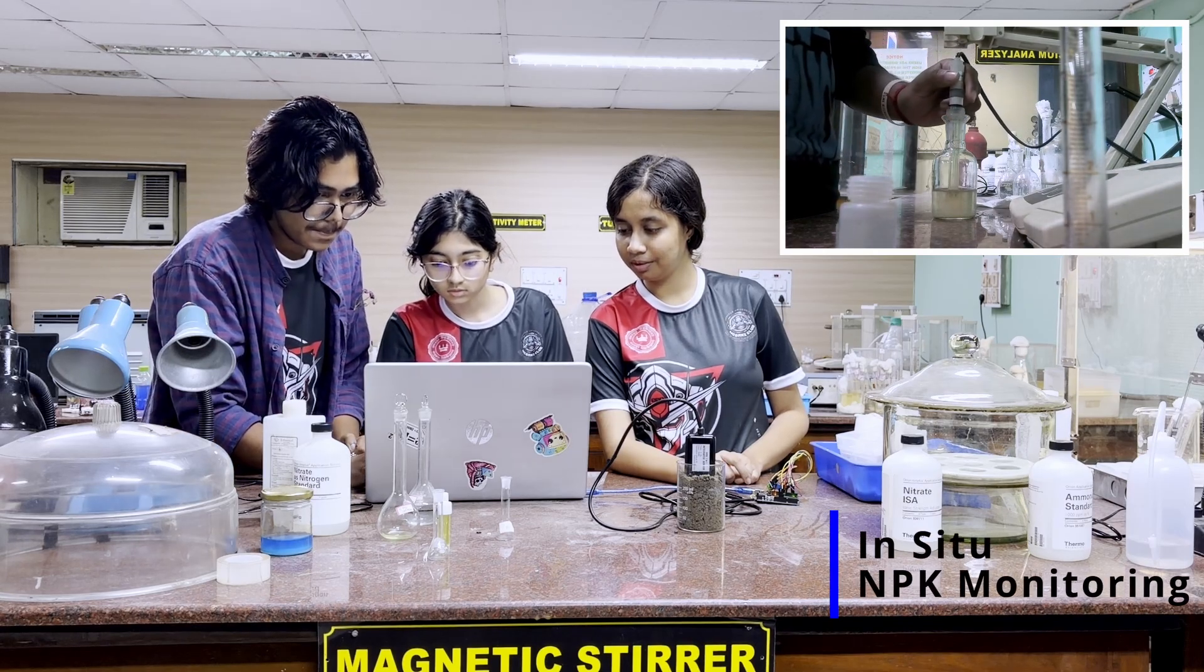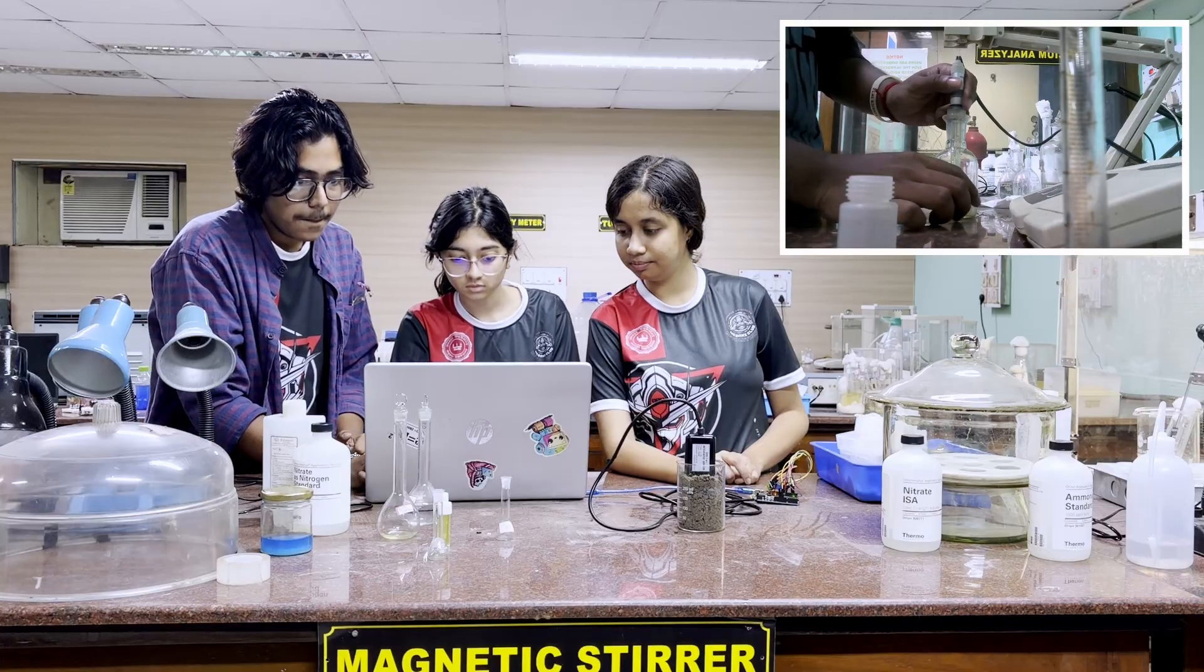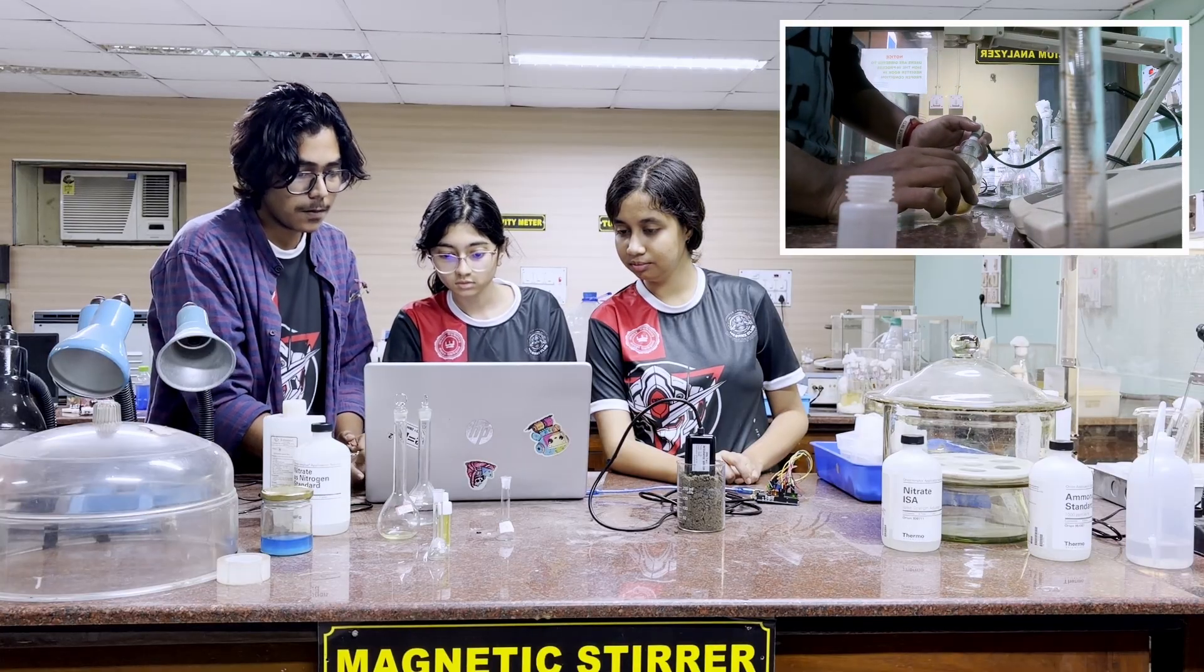For surface analysis, we are using a 7-in-1 NPK sensor to measure Nitrogen, Phosphorus, Potassium, Humidity, Temperature, Pressure, and Electrical conductivity.